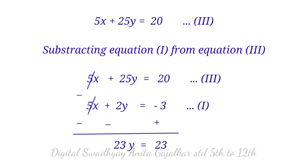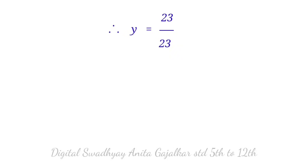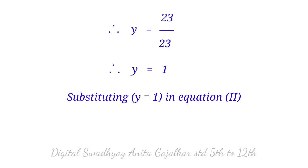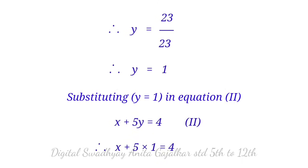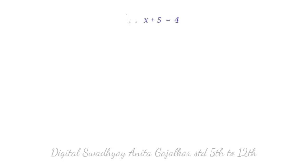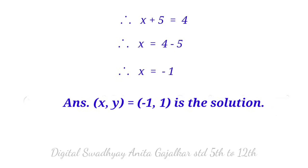Due to subtraction, signs of first equation change, giving 23y equal to 23. Therefore y equal to 1. Substituting y equal to 1 in equation second: x plus 5 into 1 equal to 4, so x plus 5 equal to 4, giving x equal to minus 1. The answer (x, y) equal to (minus 1, 1) is the solution.